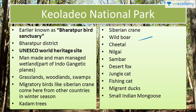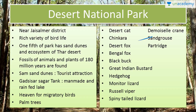Next we have Desert National Park, near Jaisalmer district. It has a very rich variety of bird life and is like a paradise for bird watchers. About one-fifth, near 20%, is covered with sand dunes. It has an ecosystem like the Thar desert. You will find here fossils of animals and plants about 180 million years old. There is a man-made rain-fed lake called Gadsisar Sagar tank where migratory birds come. You will also see palm trees here. Animal species include desert cat, chinkara, desert fox, Bengal fox, black buck, great Indian bustard, hedgehog, monitor lizard, Russell's viper, spiny-tailed lizard, and birds — demoiselle crane, sand grouse and partridge.